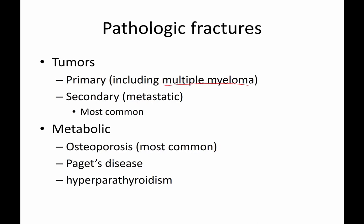Secondary tumors — metastatic disease — are the most common cause of pathologic fractures. For example, a patient with lung cancer that has metastasized to bone may present with a pathologic fracture.